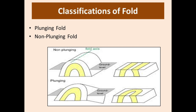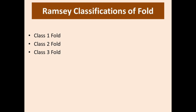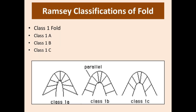Now we discuss the Ramsay classification. Ramsay classification includes three types: Class 1, Class 2, and Class 3 folds. Class 1 fold is one in which inner curvature is greater than outer curvature and isogons converge towards each other. Class 1 is further divided into Class 1a, 1b, and 1c.